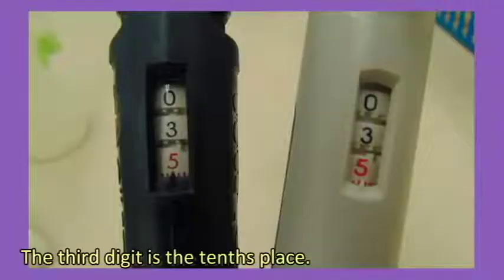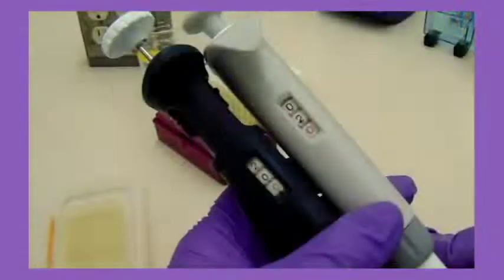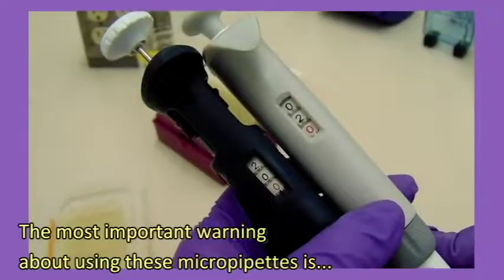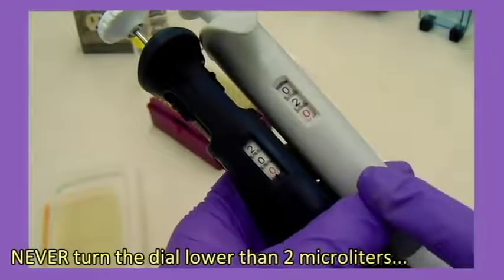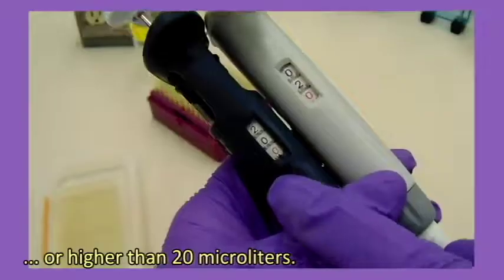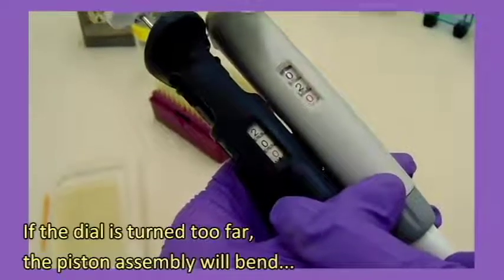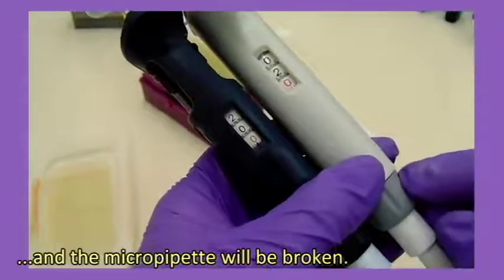The third digit is the tenths place. They've made it red to remind you. The most important warning about using these micropipettes is never turn the dial lower than 2 microliters or higher than 20 microliters. If the dial is turned too far, the piston assembly will bend and the micropipette will be broken.